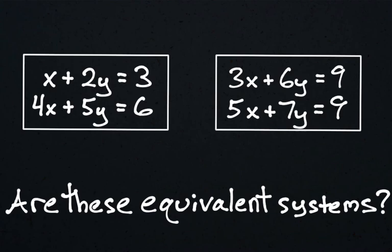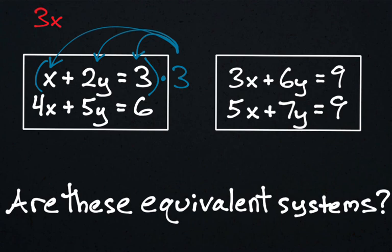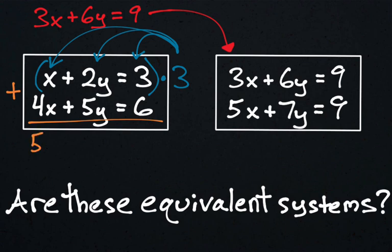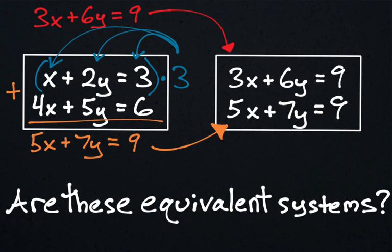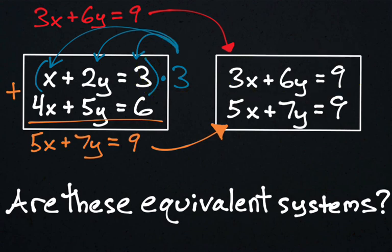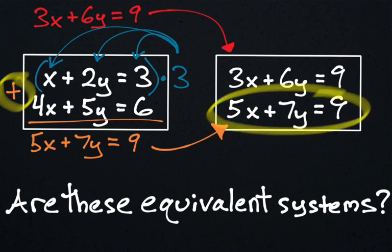Here's the last practice problem. Are these equivalent systems? Pause the video — good luck. The top equation: if you multiplied it by three, x times three is 3x, 2y times three is 6y, and three times three is nine. That is the top equation of the new system. Then if you added the two equations together, x plus 4x is 5x, 2y plus 5y is 7y, and three plus six is nine — that is the bottom equation. So the answer is yes, these are equivalent systems. The basic idea is that you are allowed to multiply equations by a number to get new equations, and you are also allowed to add the two equations together to get equations in the new system.